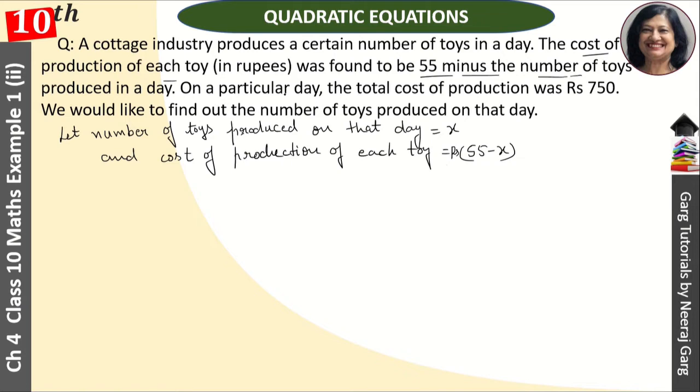Now, you said that on a particular day, the total cost of production was Rs. 750. Total cost Rs. 750. Now, how does it appear?